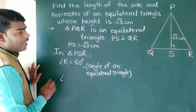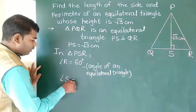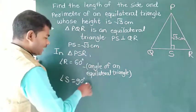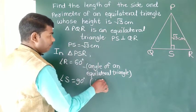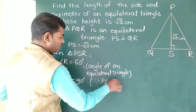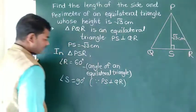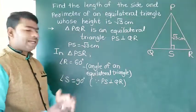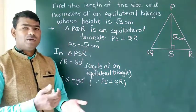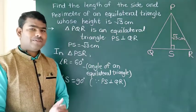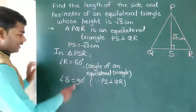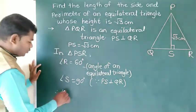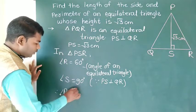The angle at S is 90 degrees because PS is perpendicular to QR. The angle at R is 60 degrees, and therefore the angle at P is 30 degrees.